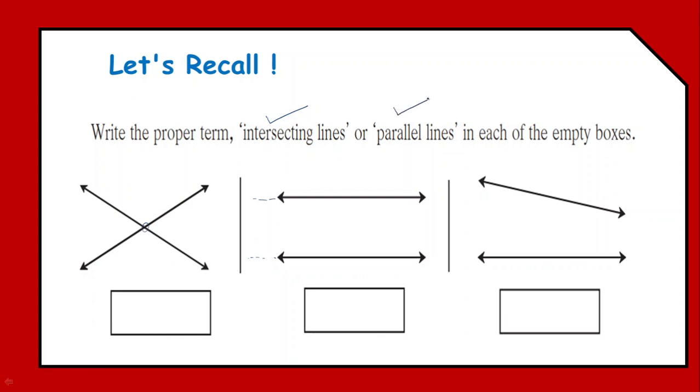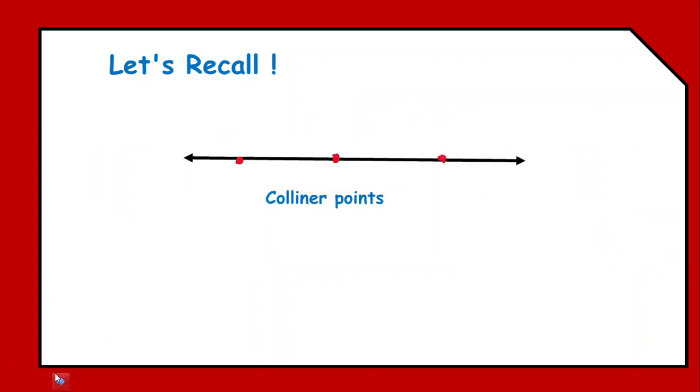So, such lines are called as parallel lines. The third pair, even though now these two lines are not meeting, but yes, if we extend them, there is a possibility that these two lines may meet. So, even this third pair is a pair of intersecting lines.